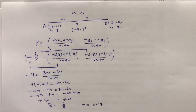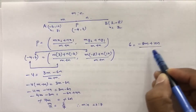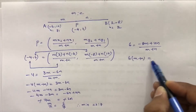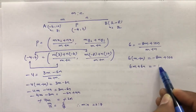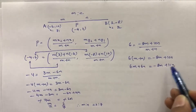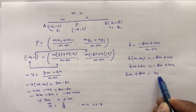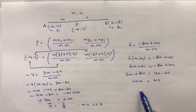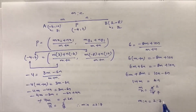Equating the ordinate: 6 = (-8m + 10n) / (m + n). Cross-multiplying: 6(m + n) = -8m + 10n, giving 6m + 6n = -8m + 10n. Collecting like terms: 6m + 8m = 10n - 6n, so 14m = 4n. Therefore m/n = 4/14 = 2/7, and the ratio m is to n is 2 is to 7. Same answer confirmed.